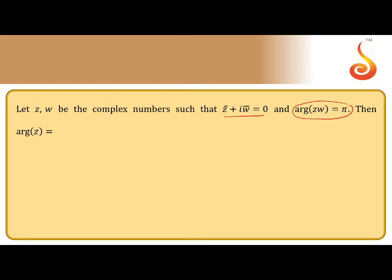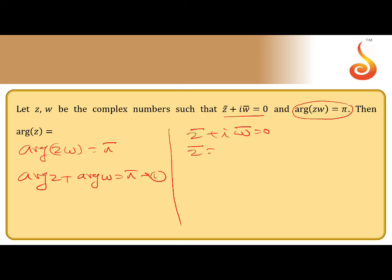The first thing, given argument of zw is π, that means argument of z plus argument of w equals π. Take it as equation 1. And further, what's given: z̄ + iw̄ = 0. So z̄ = -iw̄.